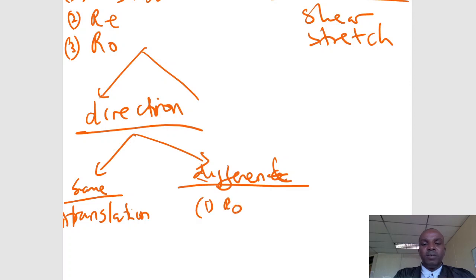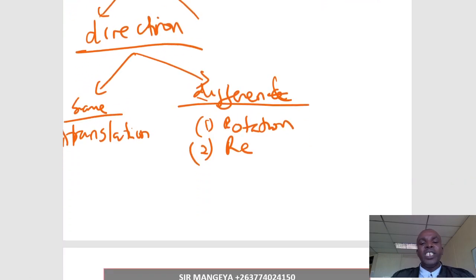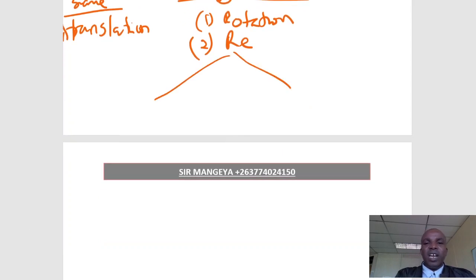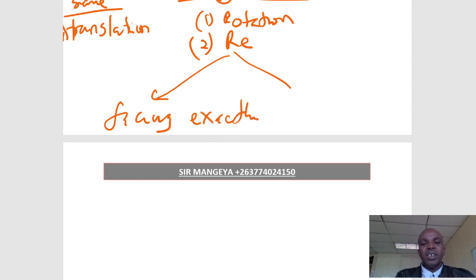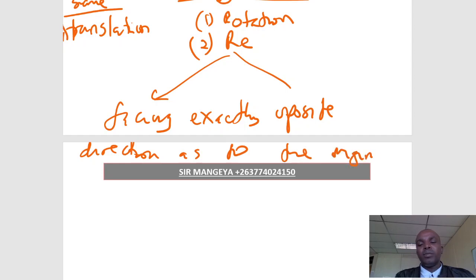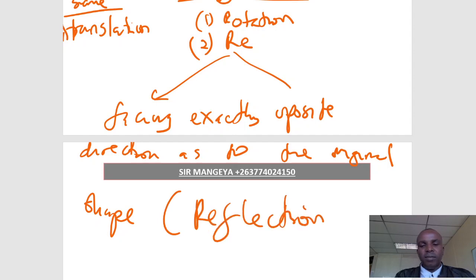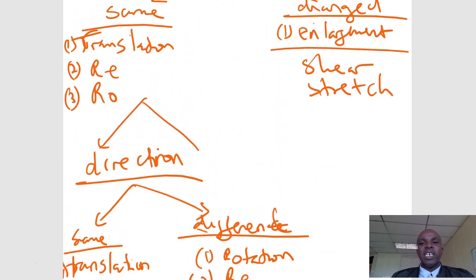If the direction is different, it can be rotation or reflection. To distinguish between them, check how the direction has changed. If the image is facing exactly the opposite direction from the original shape, then it's a reflection. Otherwise, it's a rotation.